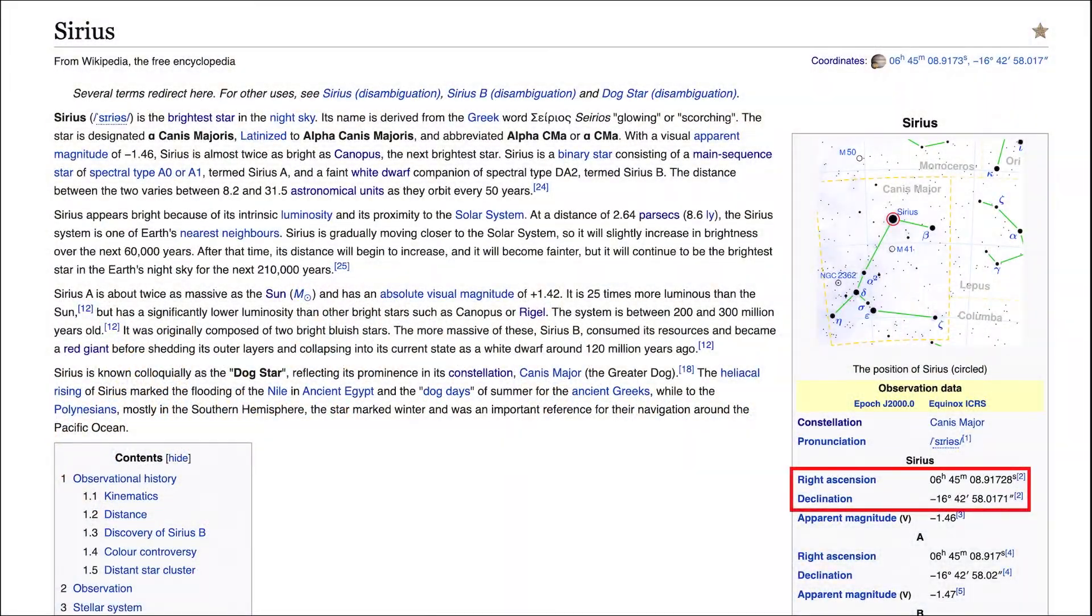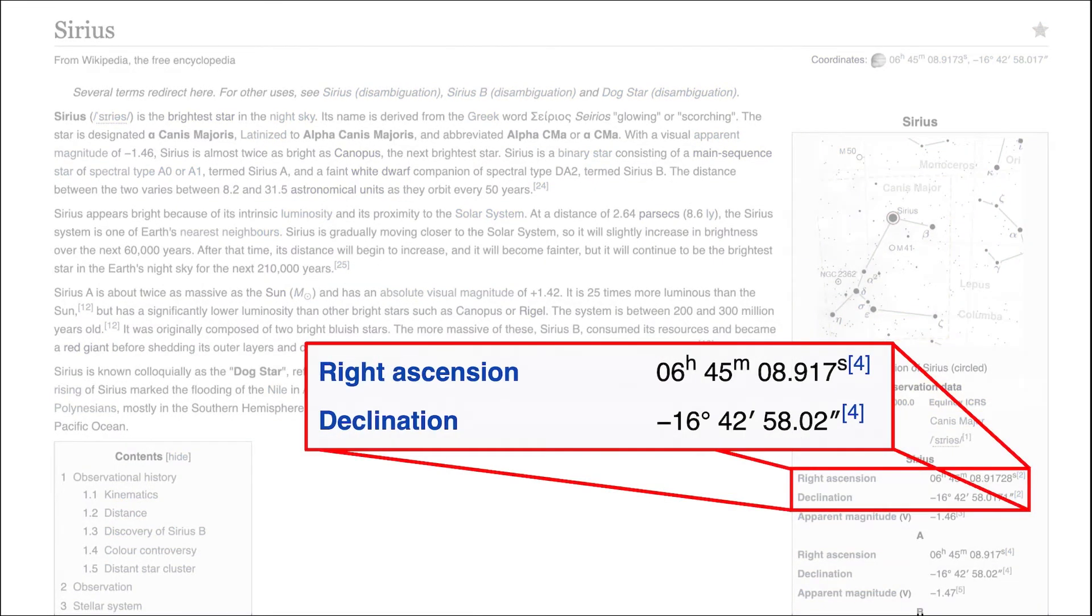The equatorial coordinates of Sirius are given in the column of fast facts about the star on its Wikipedia page. It has a right ascension of 6 hours and 45 minutes and almost 9 seconds, and a declination of negative 16 degrees, 42 arc minutes, and about 58 arc seconds.